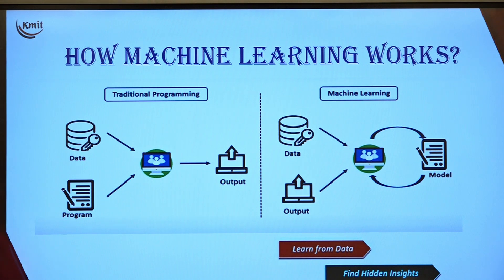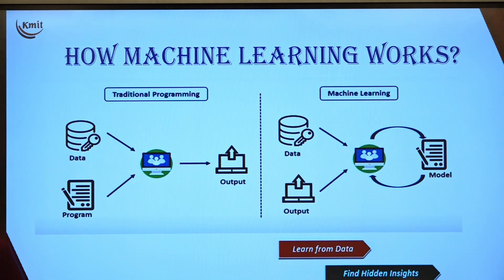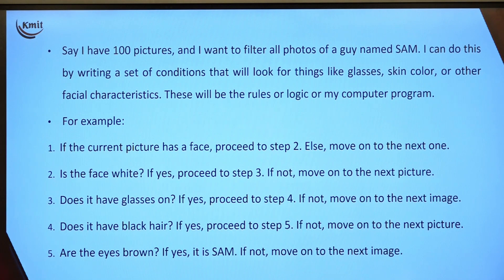In machine learning, basically the machine learns the data, finds the hidden insights — that is, patterns in the data — and then a model is developed, trained, and used to predict results.